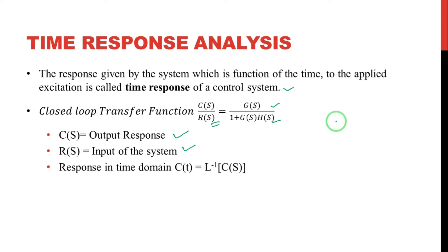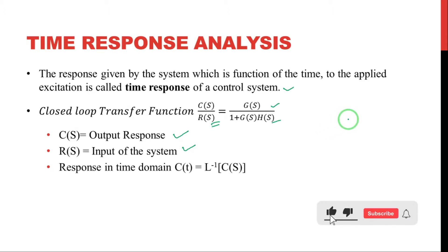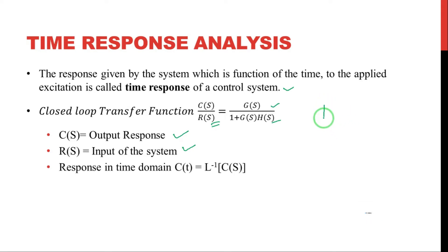A good example application is a fan. A fan is a physical system that has a transfer function we need to analyze in the time domain. When you switch on a fan, it doesn't immediately reach its rated speed — it takes some time to reach that rated speed. That time period is called the transient time, and after it reaches the rated speed, the remaining period is called the steady state.